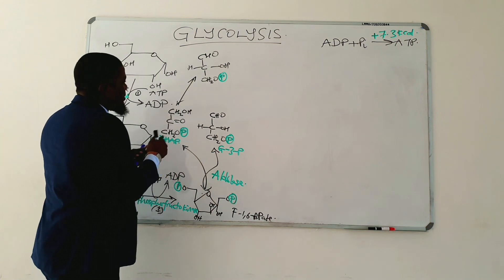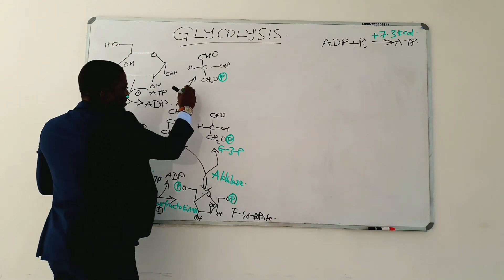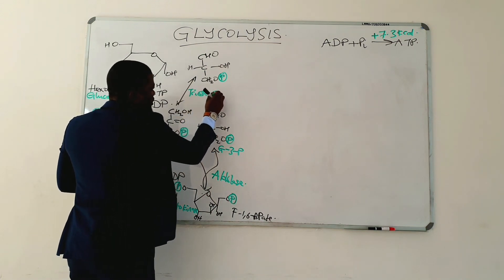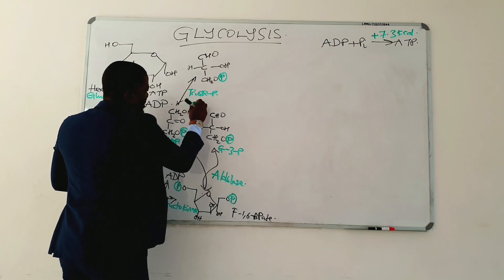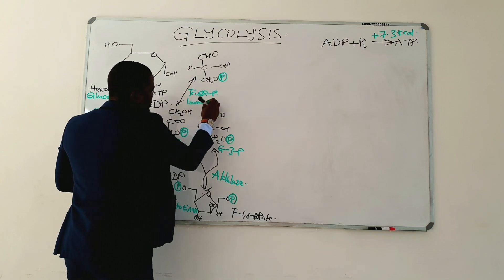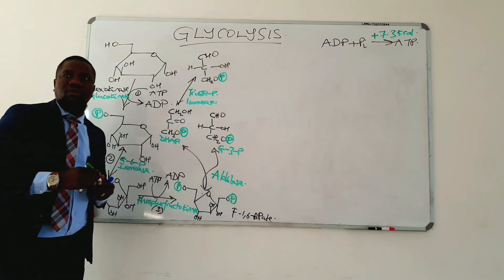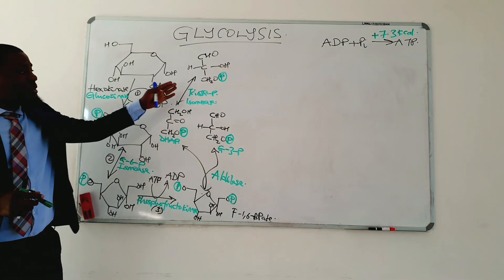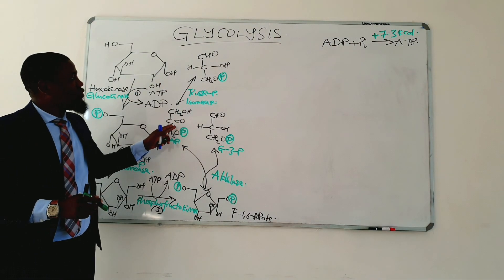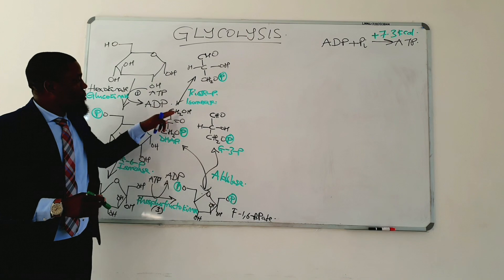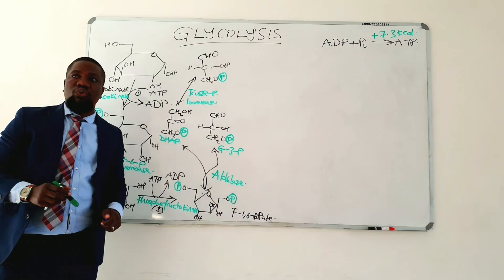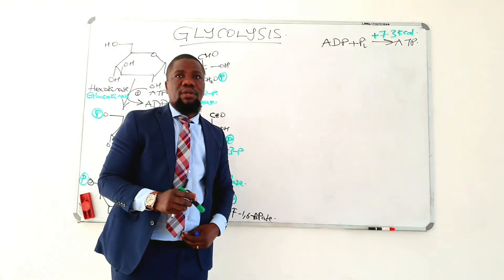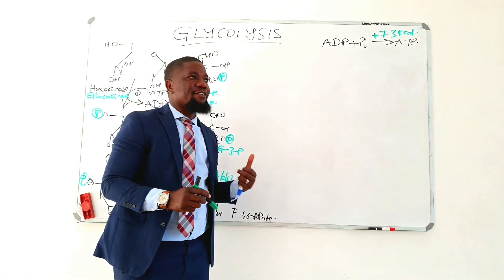The enzyme catalyzing this reaction is triose phosphate isomerase, because it is isomerizing triose phosphate from its keto form into its aldose — that is, aldehyde — form.